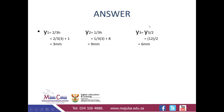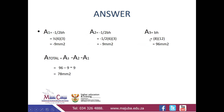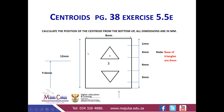For y3, it is simple because it is a rectangle. y3 will be the total height divided by 2: 12 divided by 2, which gives us 6 millimeters.